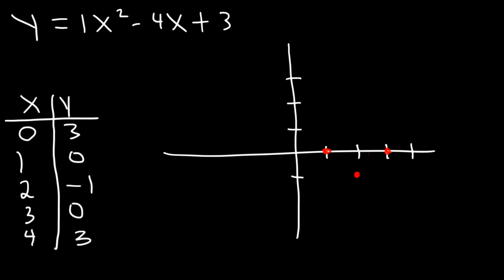The y-intercept is (0, 3), where the curve touches the y-axis. And we have the point (4, 3). The graph is going to look something like this.